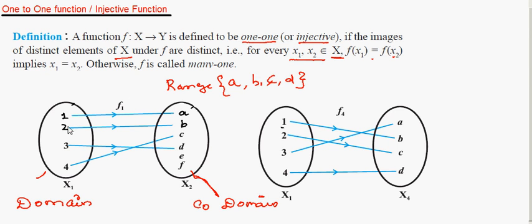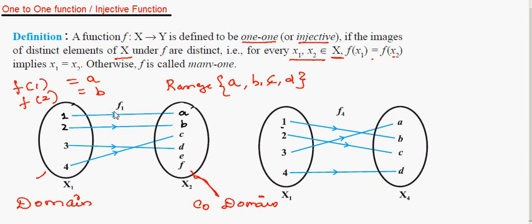What does one-to-one mean? When you take different values of x, each maps to a distinct image. For example, f(1) = a, f(2) = b, f(3) = d, f(4) = c. For distinct elements of x, the images are distinct — you will not get the same image for two different values of x. That kind of function is called a one-to-one function.